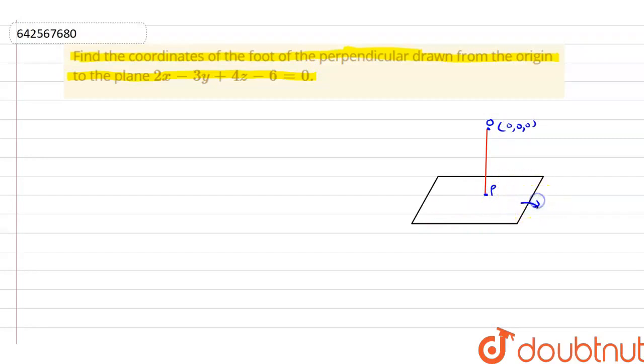So here the equation of our plane is 2x - 3y + 4z - 6 = 0. So now we can see that the direction ratio of the OP, the direction ratio of the OP.